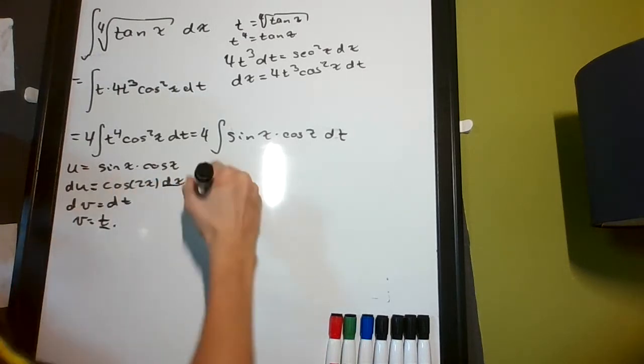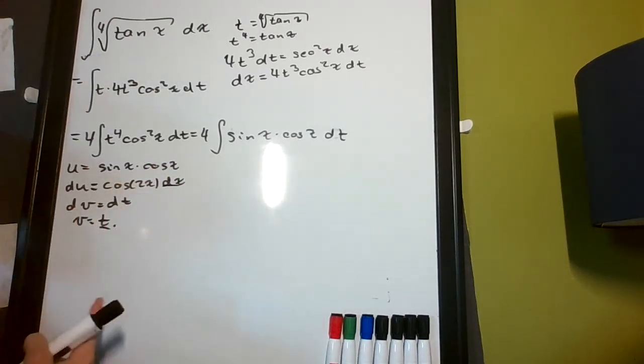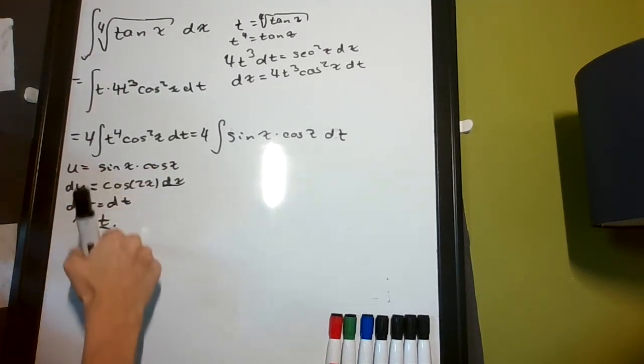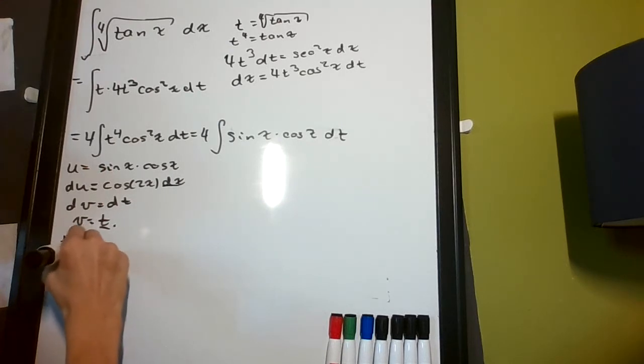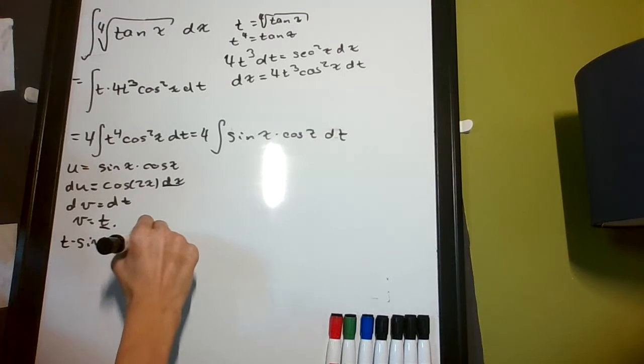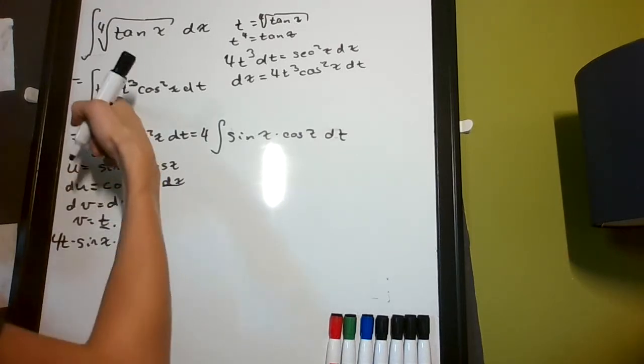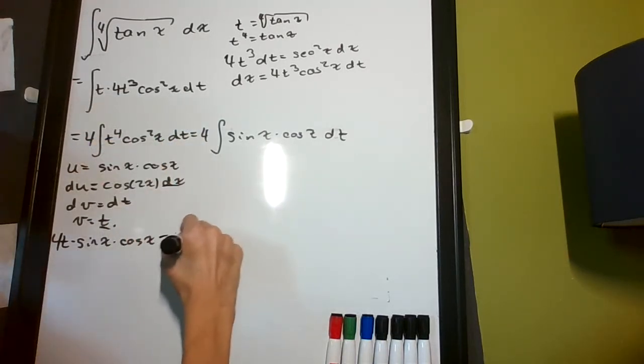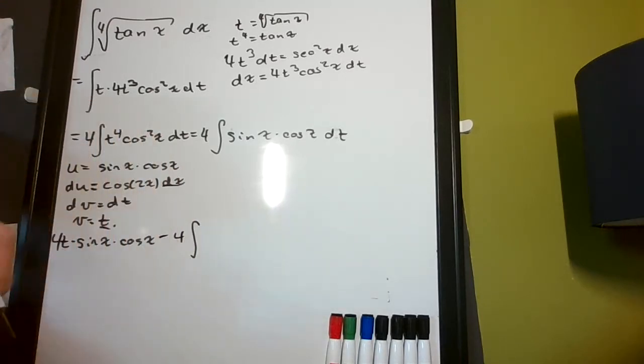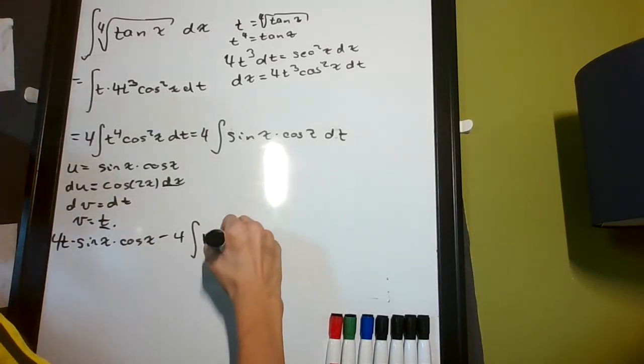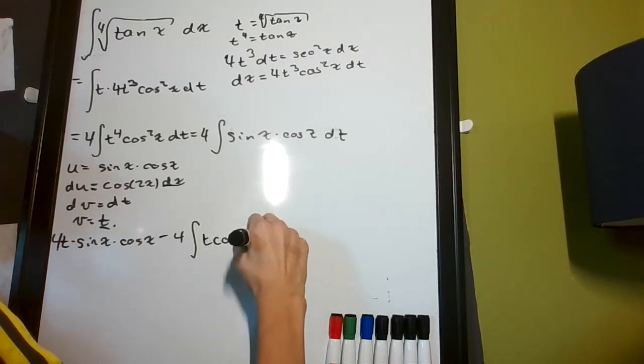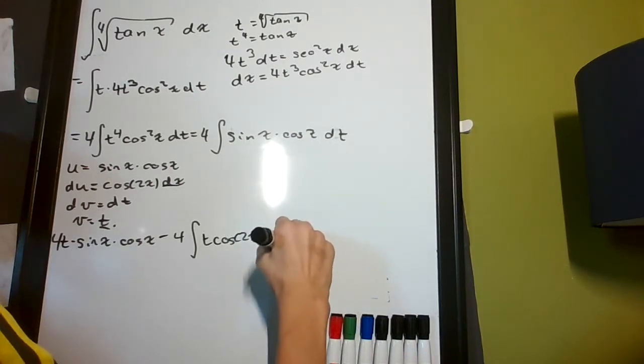So now, we're going to have u times v, so it's going to be t times sine of x times cosine of x, 4, because we have 4 out here, minus 4 times the integral of vdu, which is going to be t cosine of 2x dx.